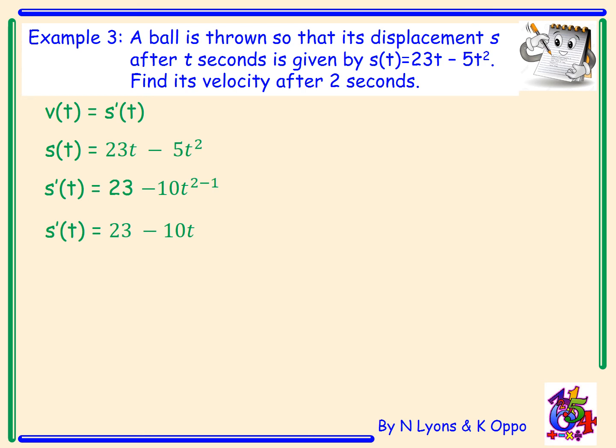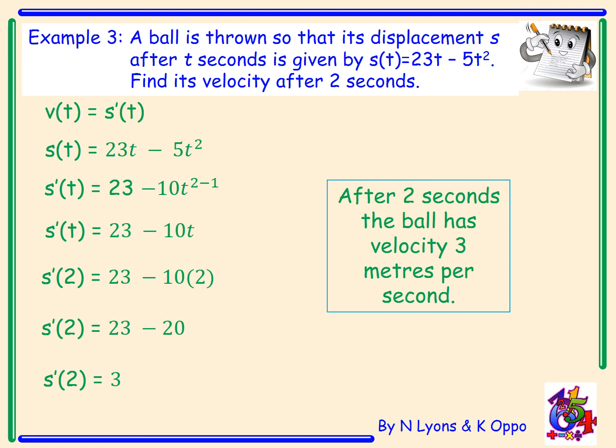We now need to find the velocity after 2 seconds, so we replace t with 2. 23 − 10 × 2 = 23 − 20, which gives an answer of 3. Therefore, after 2 seconds, the ball has a velocity of 3 metres per second.